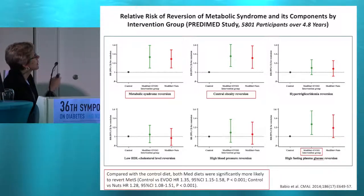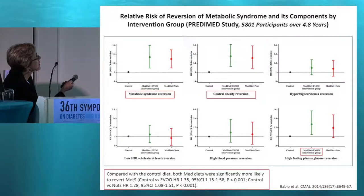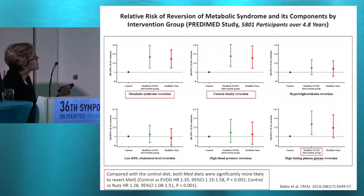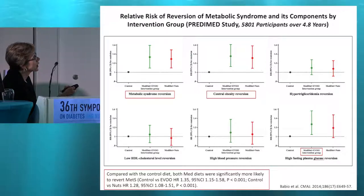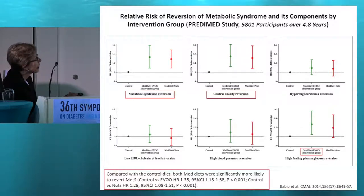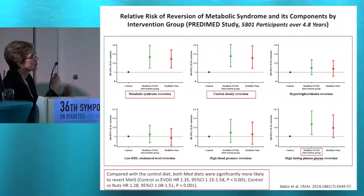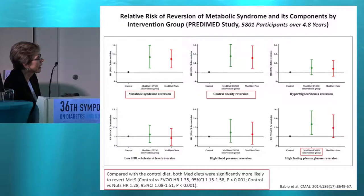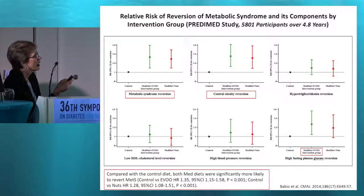What did PREDIMED show in terms of metabolic syndrome? Both Mediterranean diets — the one with extra virgin olive oil and the one with nuts — caused a reversion in metabolic syndrome in subjects who had metabolic syndrome at the start. There was a decrease in central obesity on both Mediterranean diet treatments, including the nut treatment group. There was also a decrease in blood glucose, a reversion from meeting metabolic syndrome criteria in the olive oil group, and a trend in the nut group.